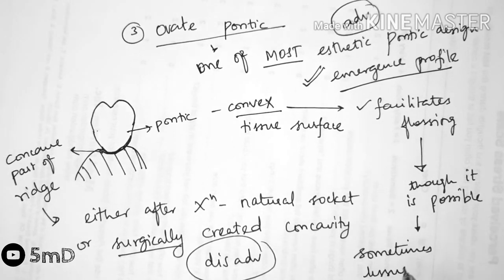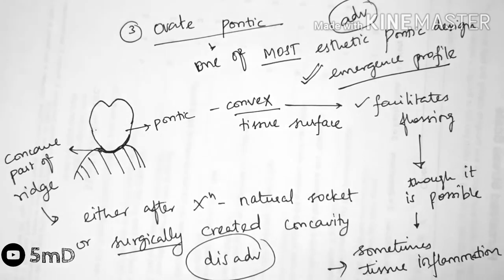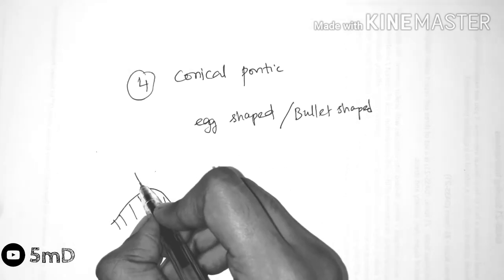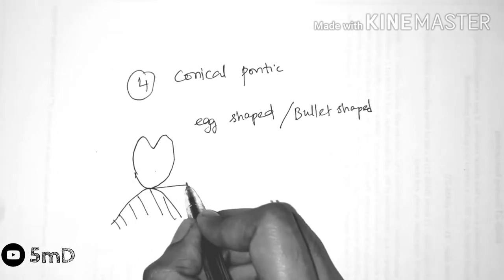Now let us see the fourth type of pontic, which is the conical pontic. It is also known as the egg-shaped or bullet shaped, sometimes the heart-shaped pontic. It has a small tip in relation to the ridge, only one point contact on the ridge.